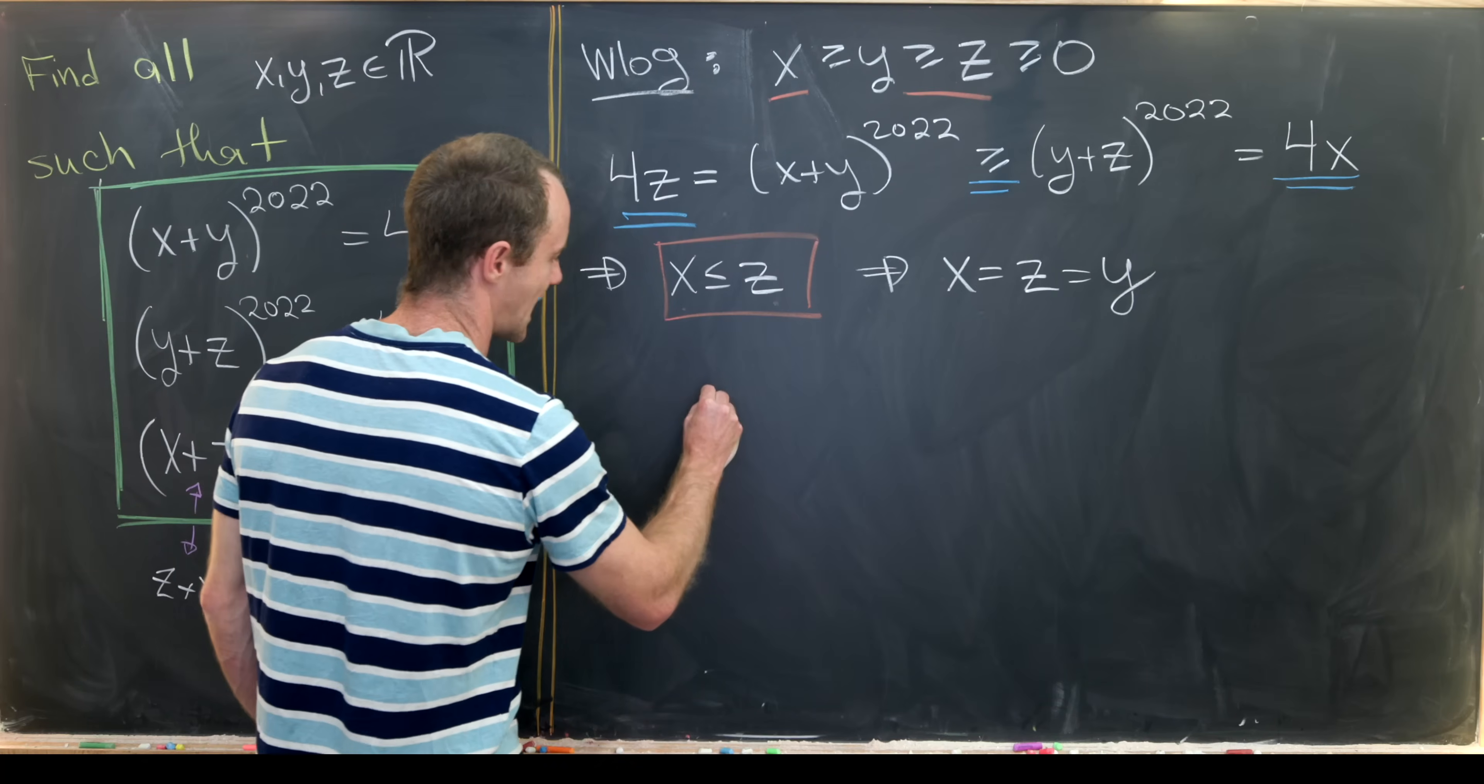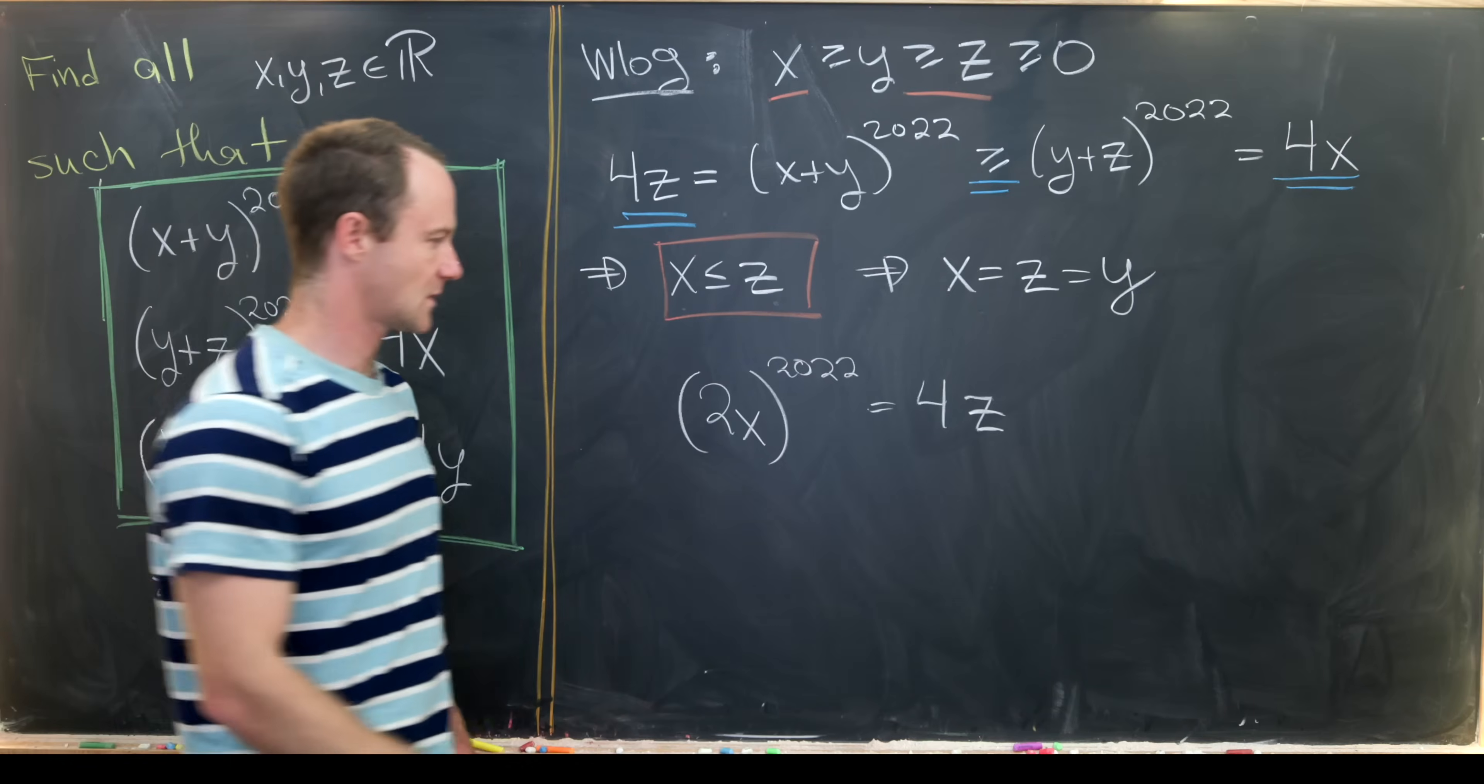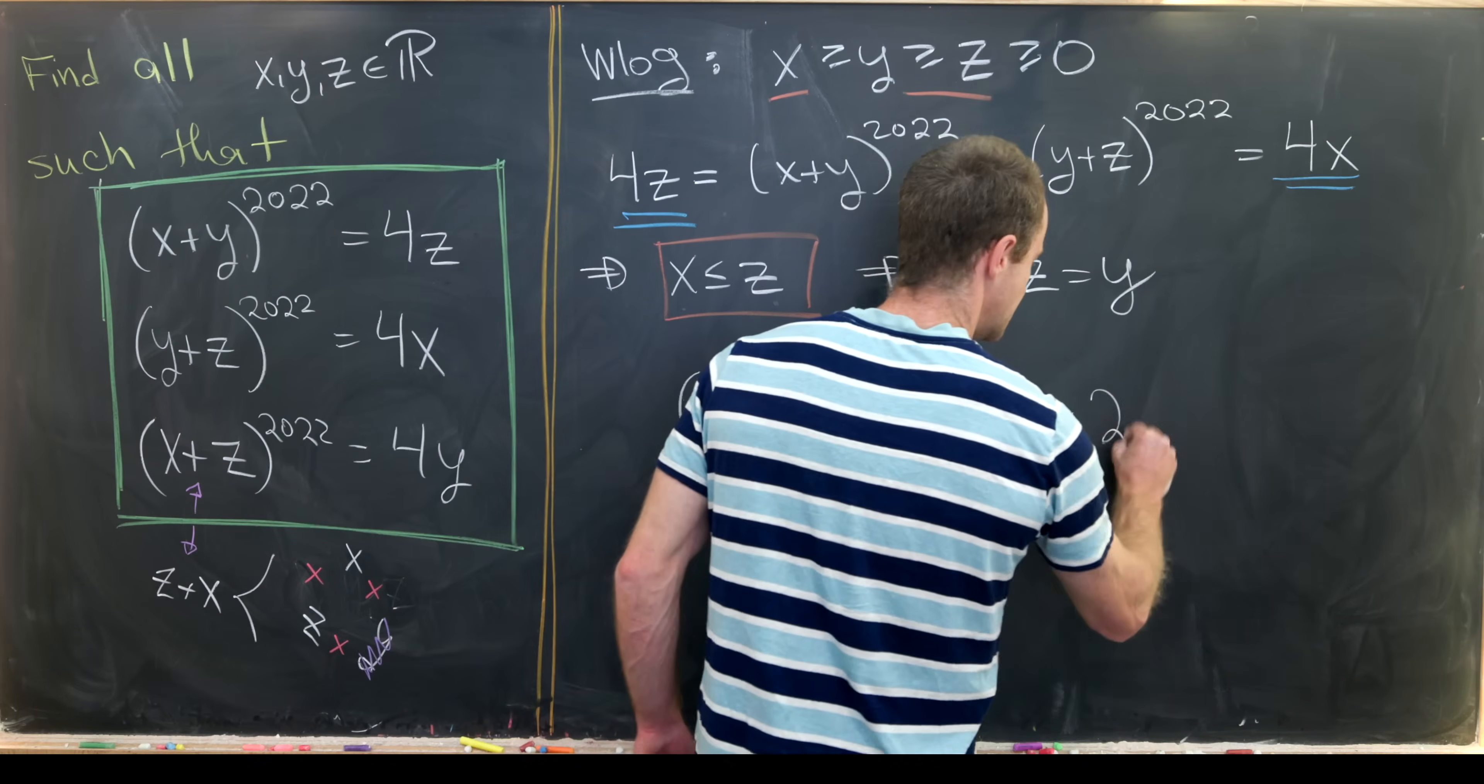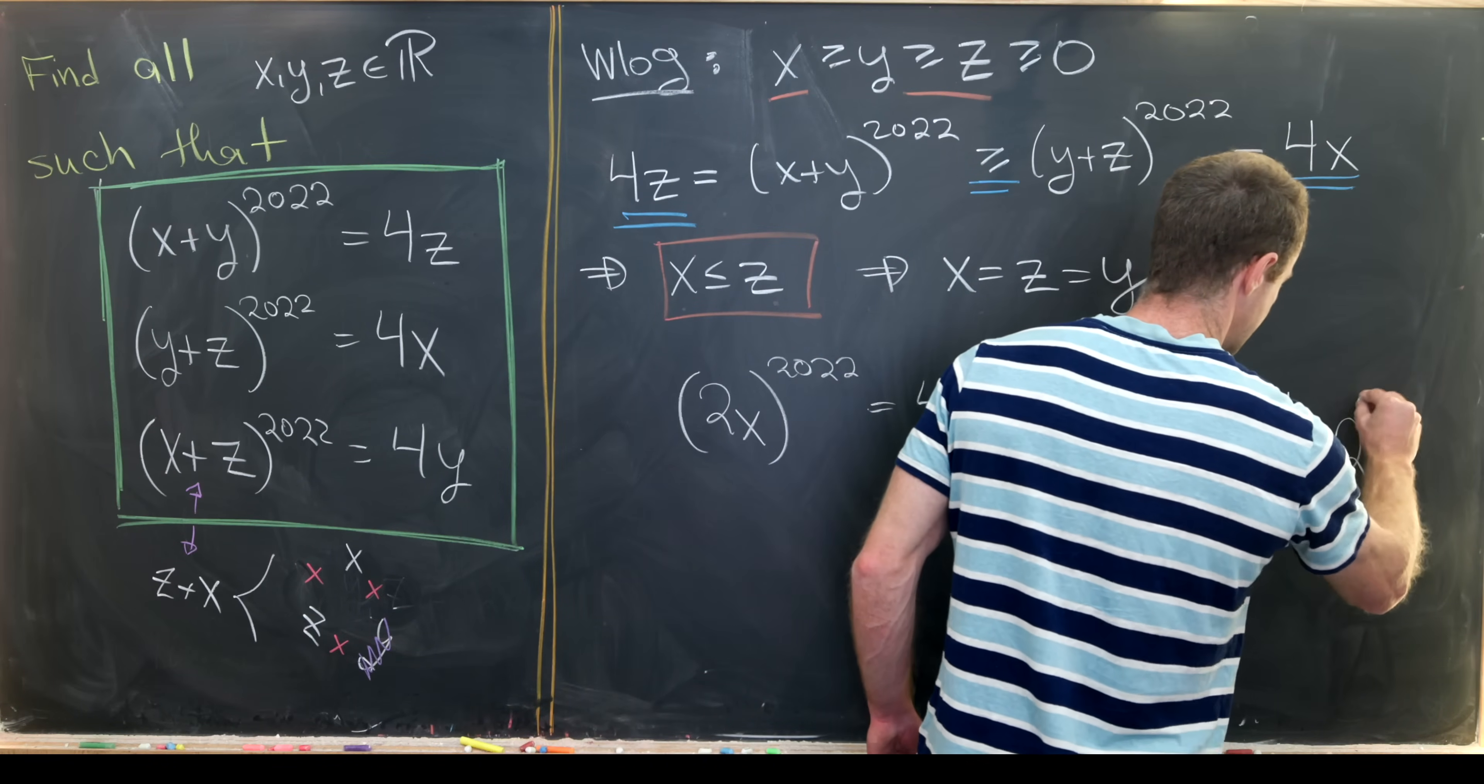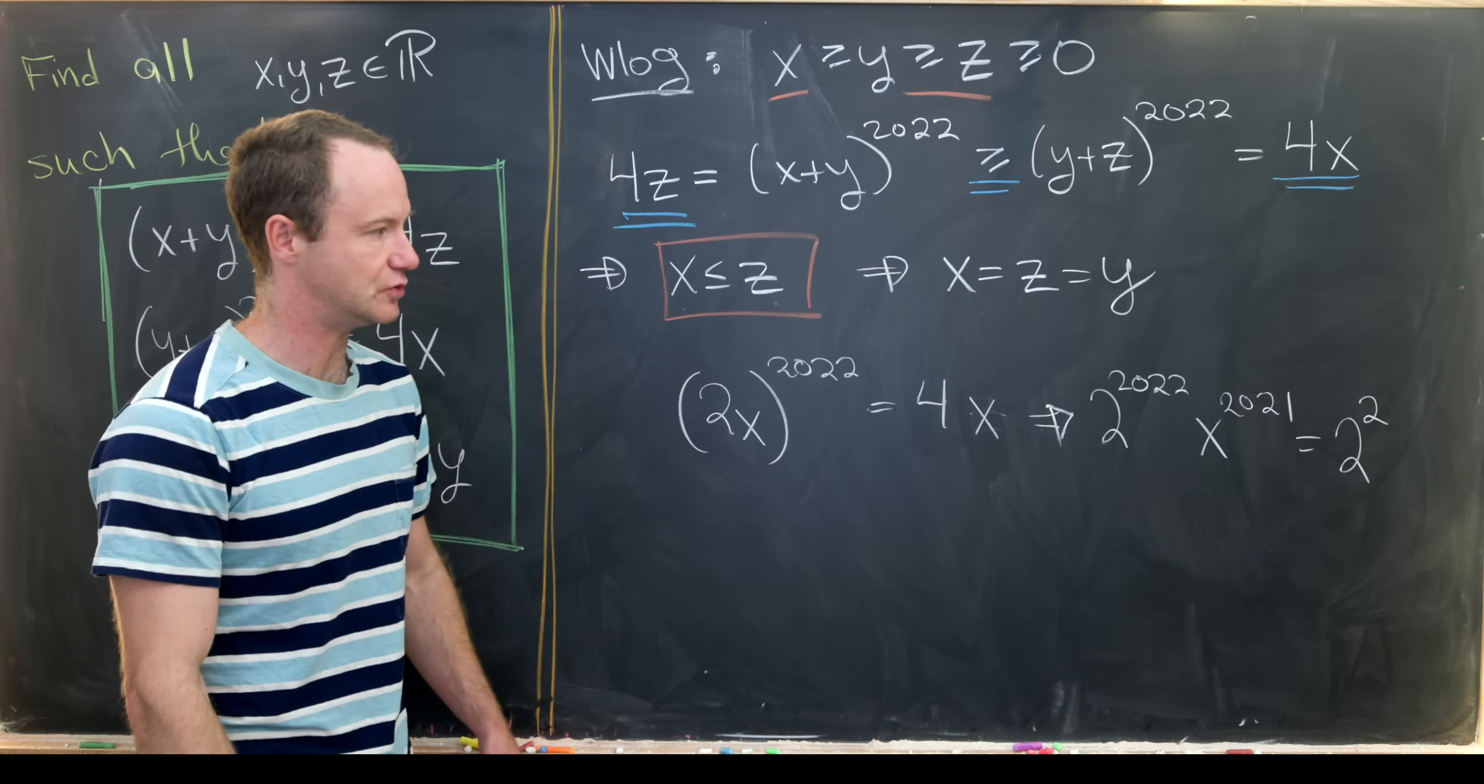So let's see, this first equation will now be (2x)^2022 = 4x. So that tells us that we have 2^2022 · x^2021 = 2^2. So I took this x over here and divided it over, taking this exponent down by 1. And then I clearly just wrote 4 as 2^2.